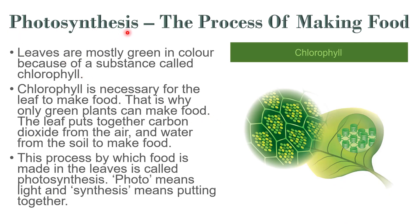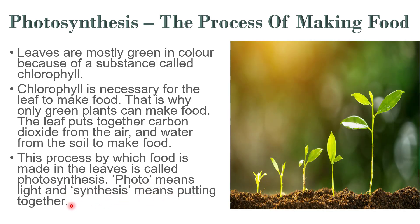Now let's discuss photosynthesis, which is the process of making food in plants. Leaves are mostly green in colour because of a substance called chlorophyll, which is necessary for the leaves to make food — that is why only green plants can make food. The leaves combine carbon dioxide from the air and water from the soil to make food. This process is called photosynthesis. Photo means light and synthesis means putting together.